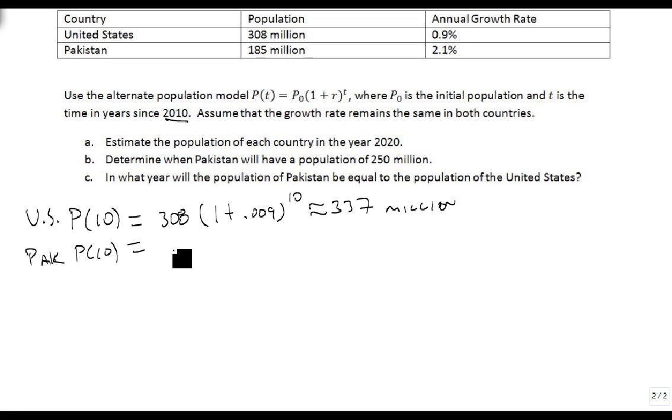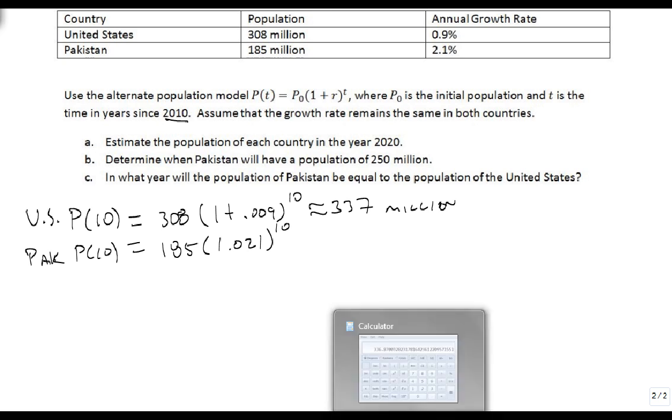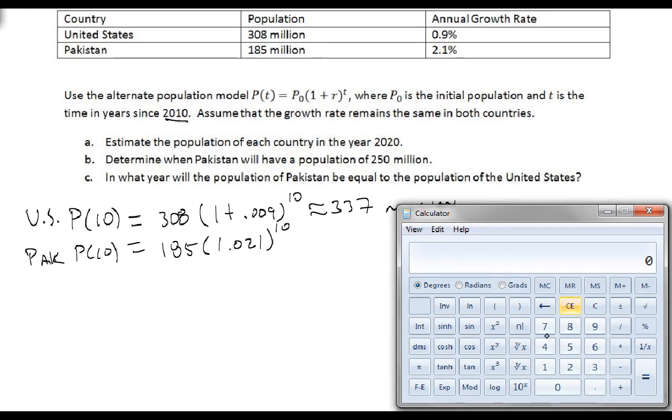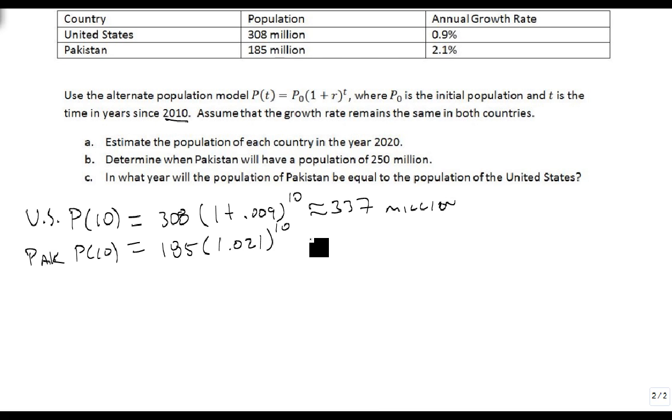For Pakistan, we just change one or two numbers because it's (1 + 0.021). Get our calculator out again: 185 times 1.021 raised to the 10th power. Hit equals - there's going to be 227.7 or 228 million people in Pakistan in 2020, if they continue growing at the same rate.